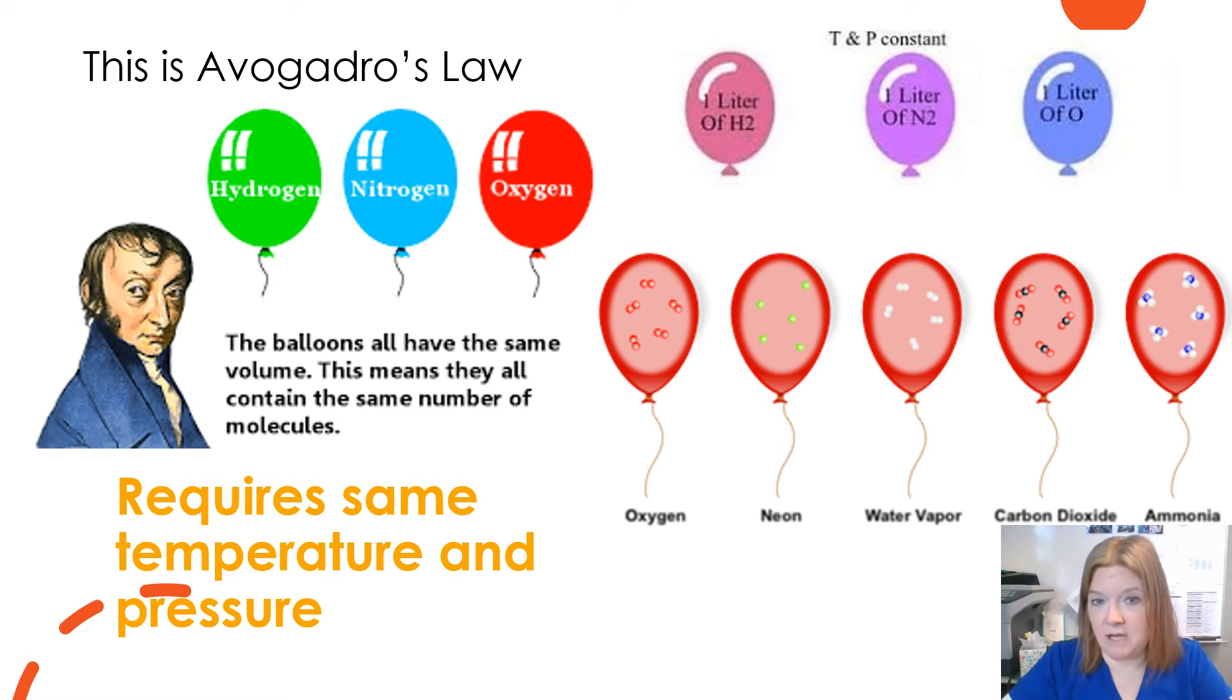So this is Avogadro's law. If we have a liter of hydrogen and a liter of nitrogen and a liter of oxygen at the same temperature and pressure, when we have the same volume, we have the same number of molecules inside. So you can see here's the visual here showing you the number of molecules inside the balloons is the same, same volume, same number of molecules, as long as we have the same temperature and the same pressure. That is Avogadro's law.